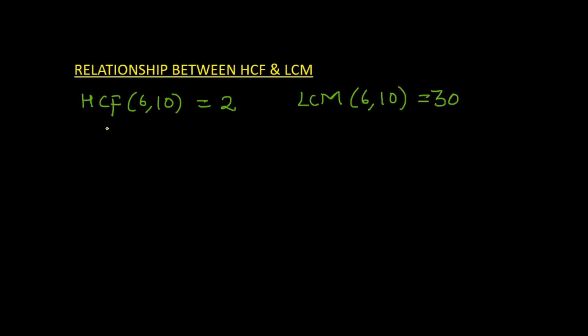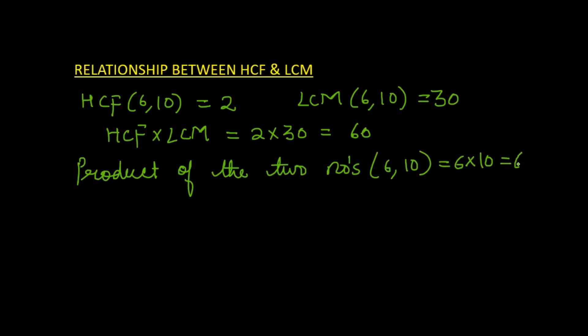Now we will find the product of HCF and LCM. HCF × LCM gives us 2 × 30 = 60. Now, what are our two numbers? Let us find the product of those two numbers. The two numbers are 6 and 10, so the product is 6 × 10 = 60. What do we see here?